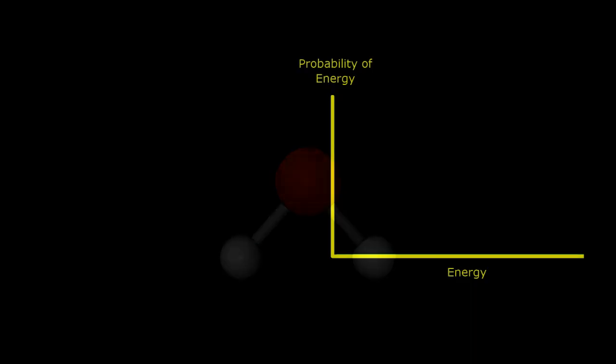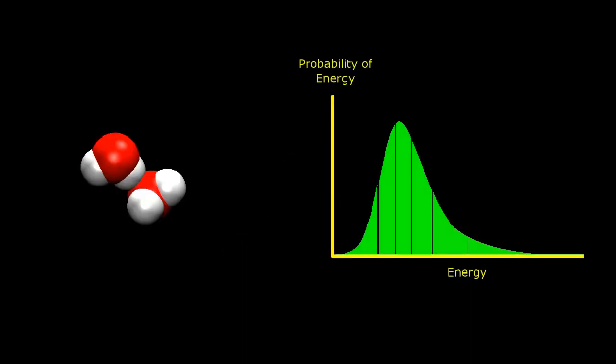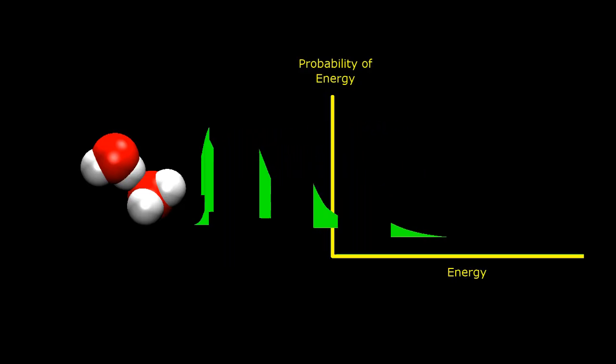To start the simulation, a range of velocities is chosen that matches the Boltzmann distribution for that temperature, and then those velocities are assigned randomly to each atom. Similar methods are then used to put energy into the bonds, angles, and dihedrals.